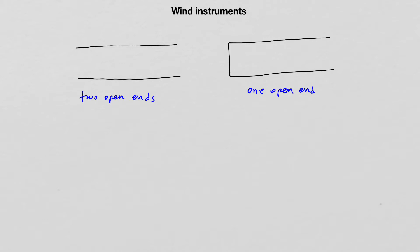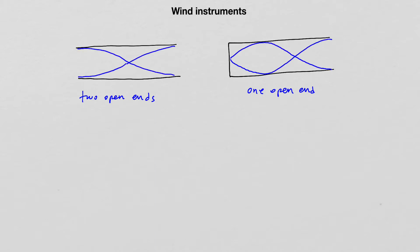The visualization of the standing waves that can form in a wind instrument will be the same as standing waves on a string. Even though the standing wave patterns are a mixture of compressions and rarefactions, it is much easier to visualize the patterns as the waves on a string.